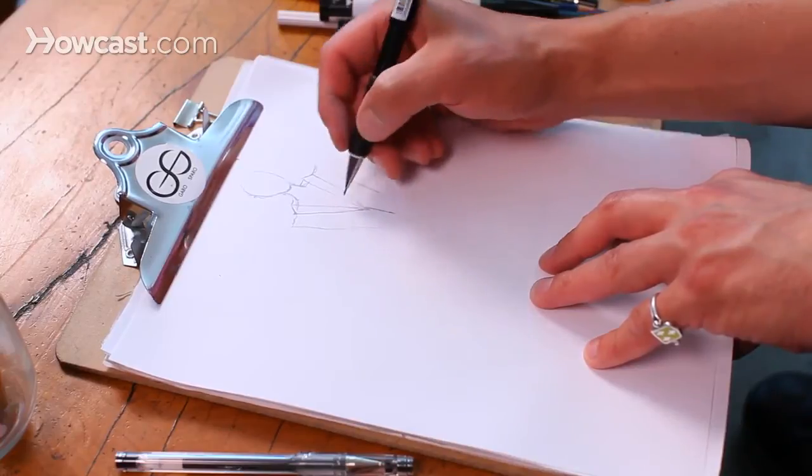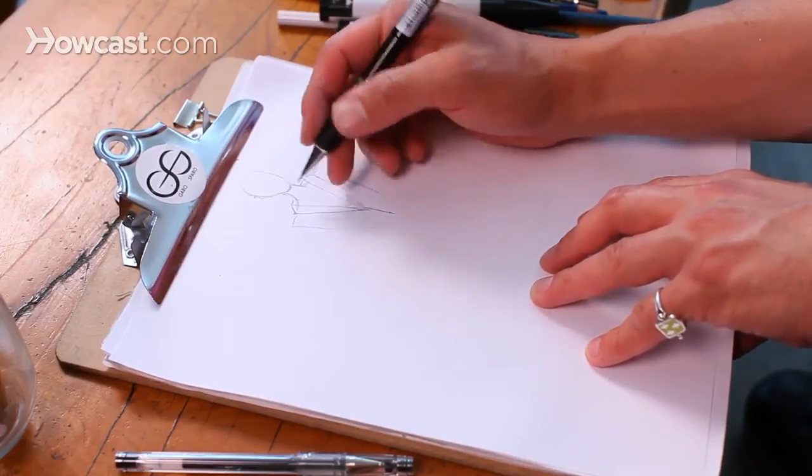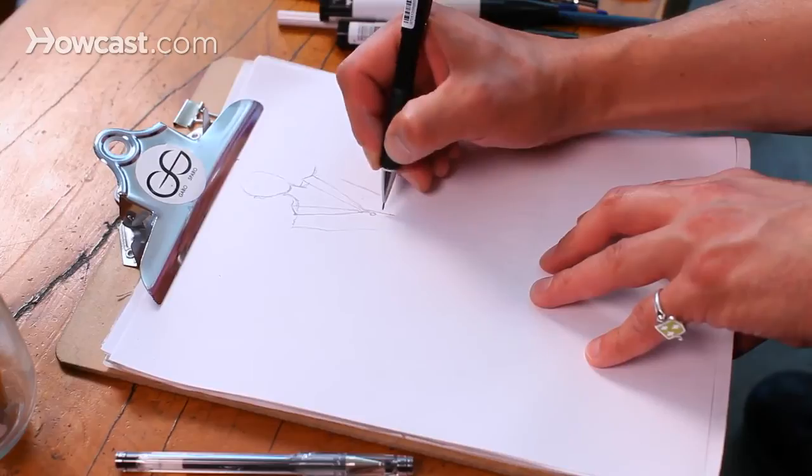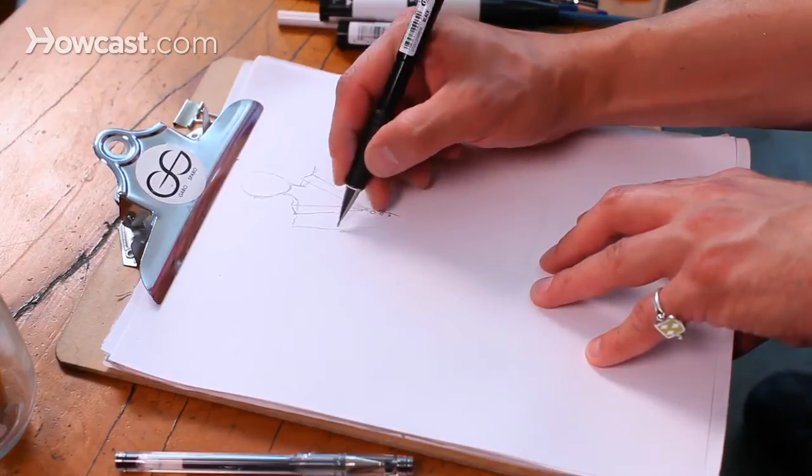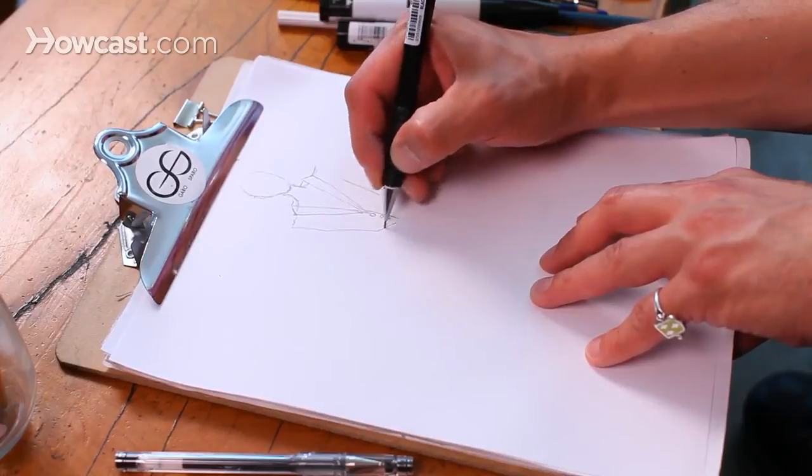Jackets always have a closure in the front, so you want to think about what kind of closure you're going to do. I'm going to do buttons, so I'll do three buttons. It's always great to do things in odd numbers when you're doing design details. It just is prettier to the eye.